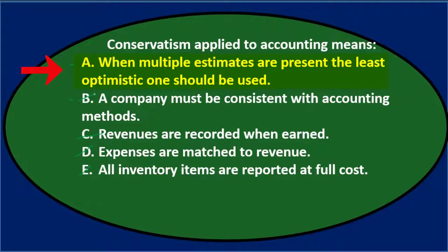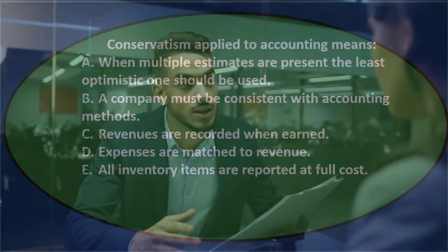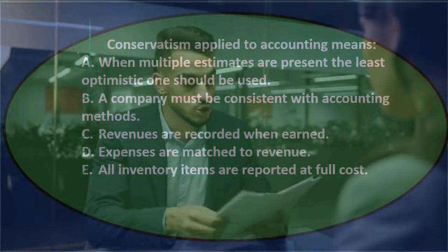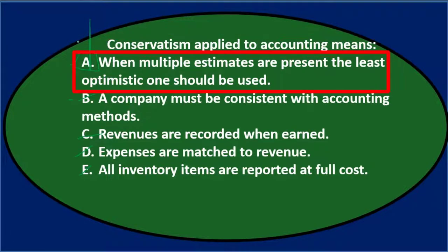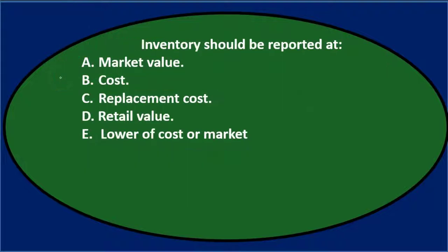Option A — when multiple estimates are present, the least optimistic one should be used — is the conservatism principle. The idea is that we don't want people to be so aggressive with financial statements that they overstate their position, which would reduce trust in the numbers. So the answer is A: when multiple estimates are present, the least optimistic one should be used.